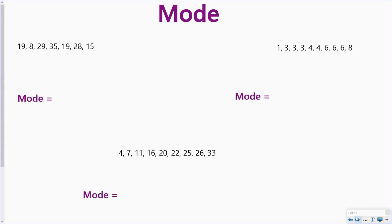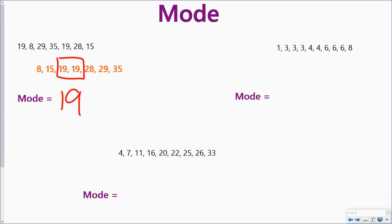If I take a look at some data sets to find the mode, my first one is here and I order it from least to greatest. I look here and it looks like 19 is the most occurring number in here, and so 19 is my mode.